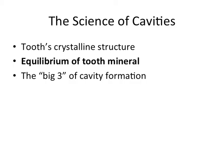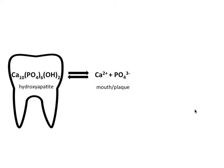Last video we talked about hydroxyapatite, we talked about carbonate substituted hydroxyapatite, and now let's apply it to this equilibrium. I've drawn out this equilibrium between hydroxyapatite in the tooth and free calcium and phosphate in the mouth and in the plaque that covers that tooth. This will be central to the rest of this video series, so write this down because we'll be referring back to it throughout.